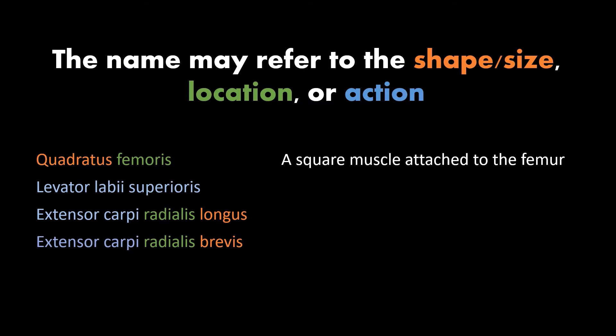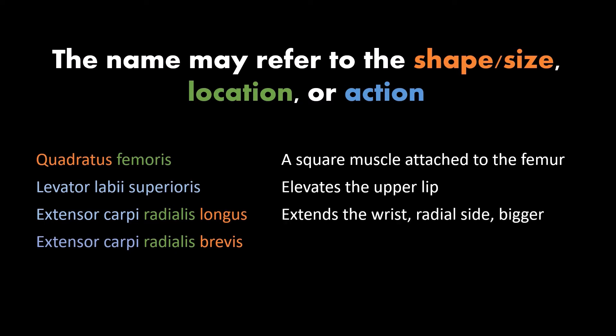The levator labiae superioris is a muscle that elevates the upper lip. Notice 'levator' is just the word 'elevator' without the 'e' on the front. 'Labiae' means lip, and 'superioris' because it's the upper lip. The extensor carpi radialis tells you it's going to extend the wrist, it's on the radial side, and we add 'longus' or 'brevis' to distinguish the two — the extensor carpi radialis longus is larger than the extensor carpi radialis brevis. Think 'brevis' — brief, short.